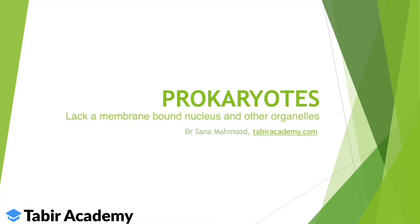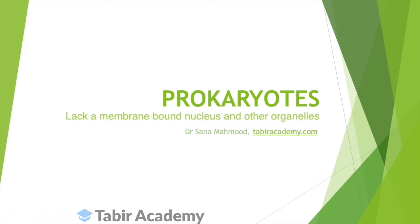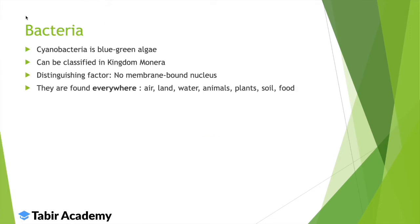Prokaryotes are organisms which lack a membrane-bound nucleus and other organelles which are also membrane-bound, like a Golgi apparatus, chloroplasts and mitochondria. We will discuss bacteria, which is a very common prokaryote, and cyanobacteria. Cyanobacteria is a blue-green type of algae. Both can be classified under kingdom Monera.